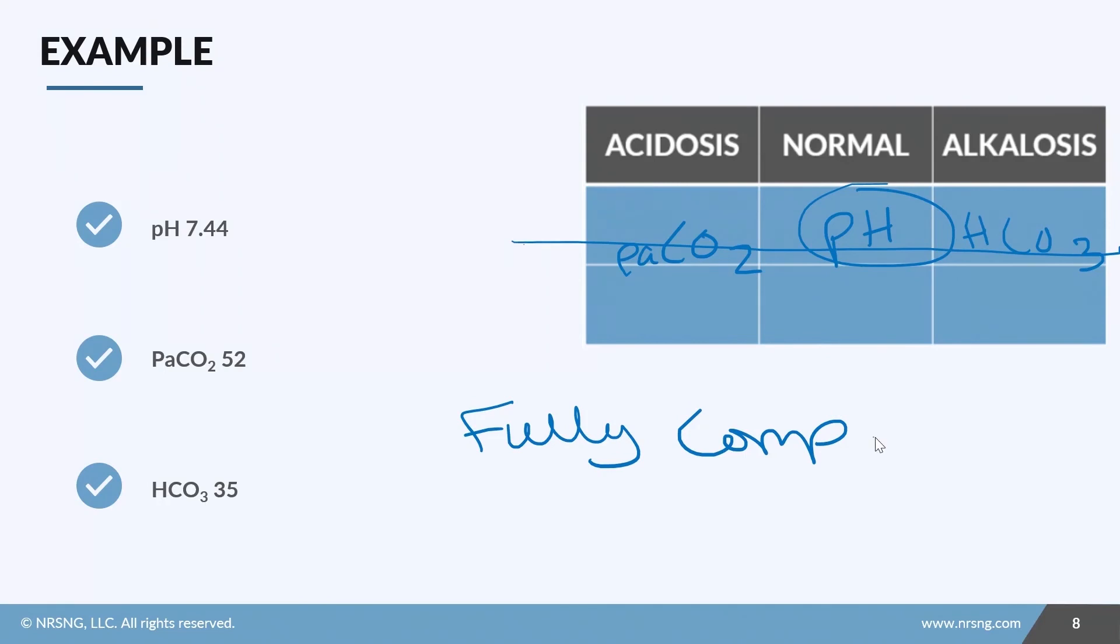So now we just have to go back to that critical thinking to determine the source. Again, we just need to know which side of normal our pH is on. In this case, it's leaning more towards alkalosis, in which case now we see that our bicarb is our source. And so this is a metabolic alkalosis that is fully compensated.